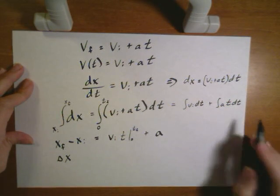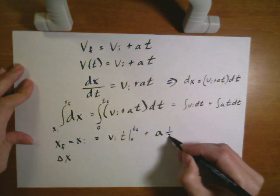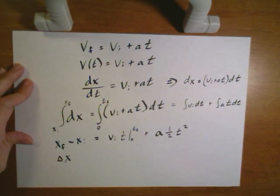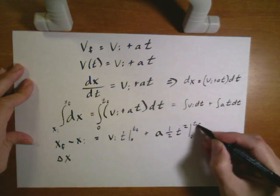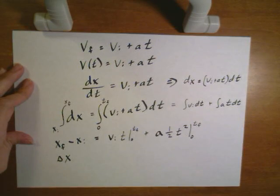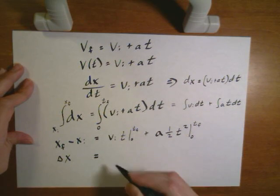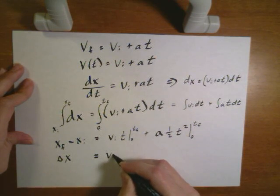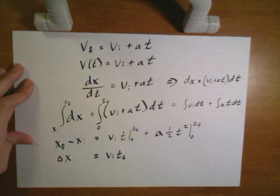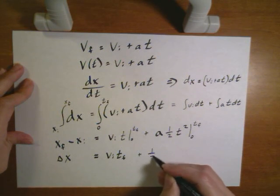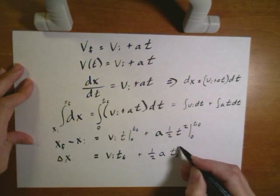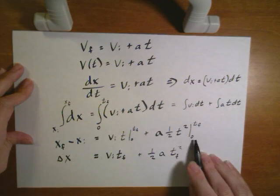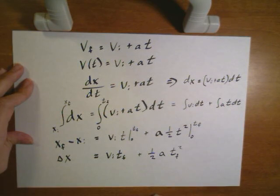Now the integral of t dt is going to give me one half t squared. Where again t is evaluated over that same range. So simplifying these down this is going to give me v_i times my final time. This one can be written as one half a t final squared. Because again the zero squared part is going to drop off.